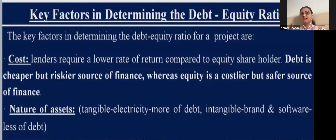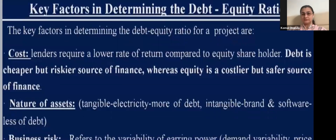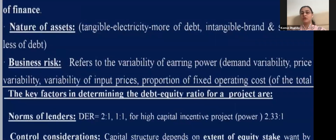Another factor is the nature of the asset. If a project has more tangible assets, we should go for more debt. If it is more intangible — like brand image or software — we should go for equity capital. Business risk is also an important factor: if you have a good risk appetite, you can go for more debt.